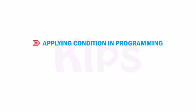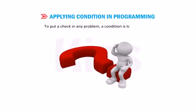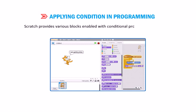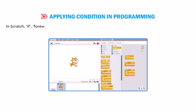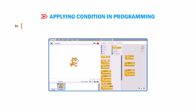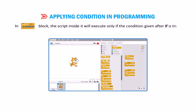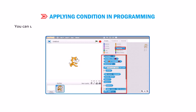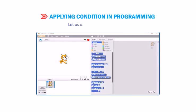Let us learn how to apply a condition in programming. To put a check in any program, a condition is to be applied. It allows the program to select an action based upon the user's input. Scratch provides various blocks enabled with conditional programming concepts. In Scratch, If, Forever If, or If Else are conditional blocks present in the control block category. In the Forever If block, the script inside it will execute only if the condition given after 'if' is true. All elongated diamond-shaped blocks in the sensing block palette are placed as a condition inside these blocks. You can use blocks from the sensing category for controlling the sprites in a better manner.